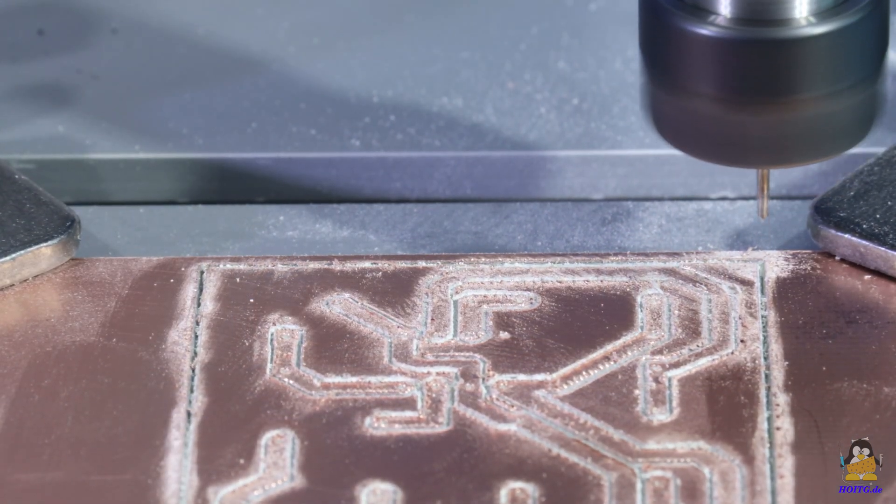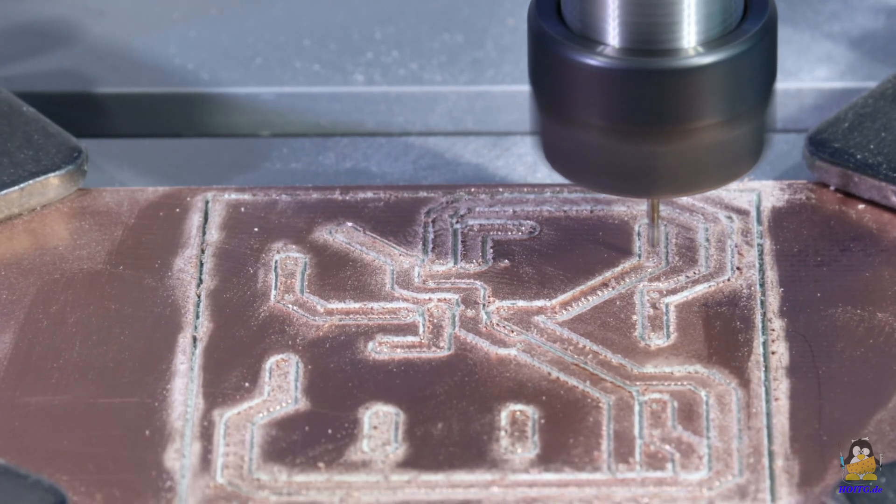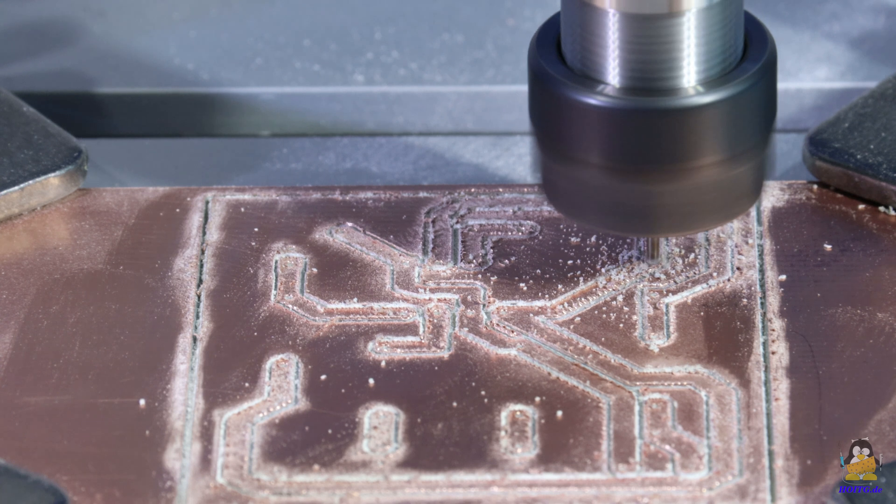In the third pass, the holes are drilled with a 1mm drill which is not part of the package, nor is the needed ER11 collet.